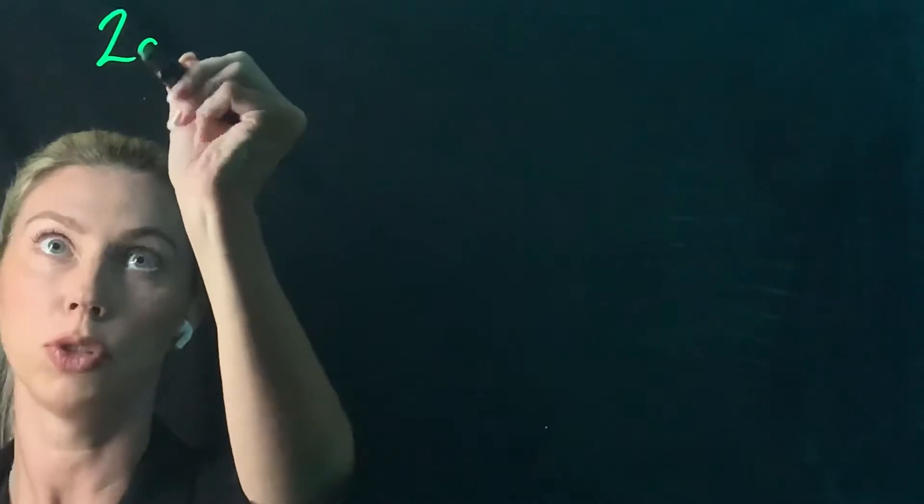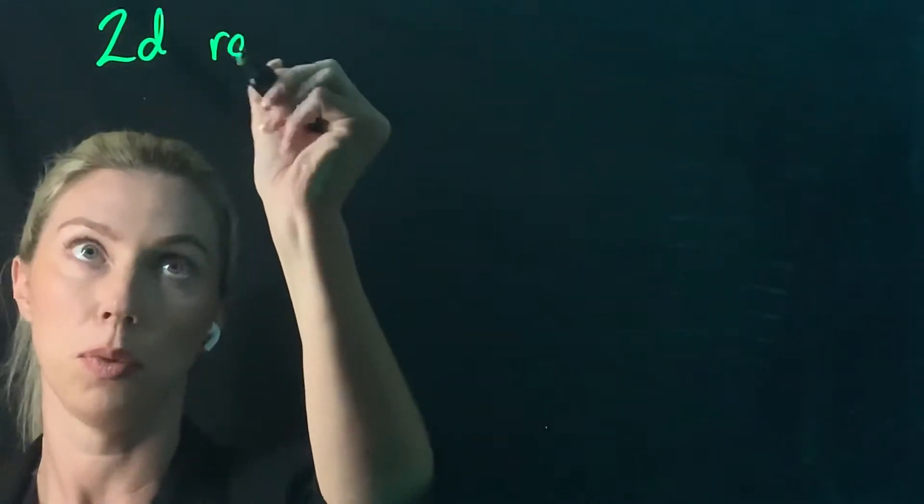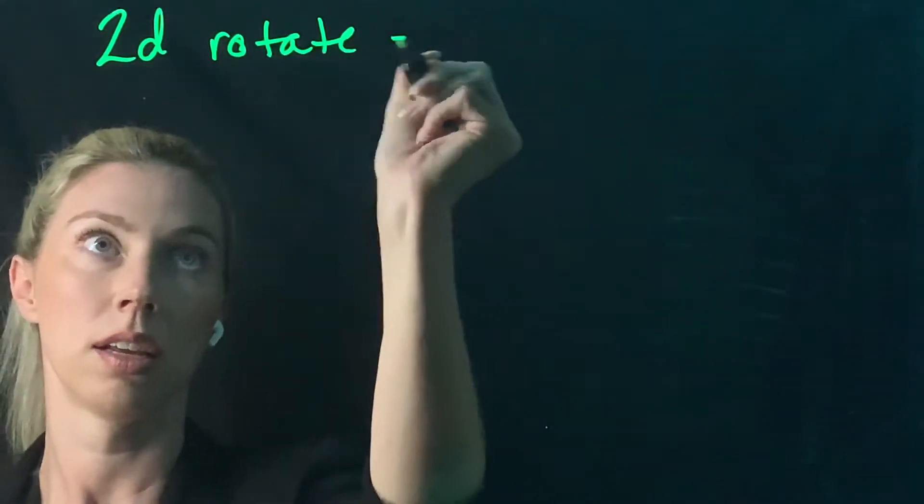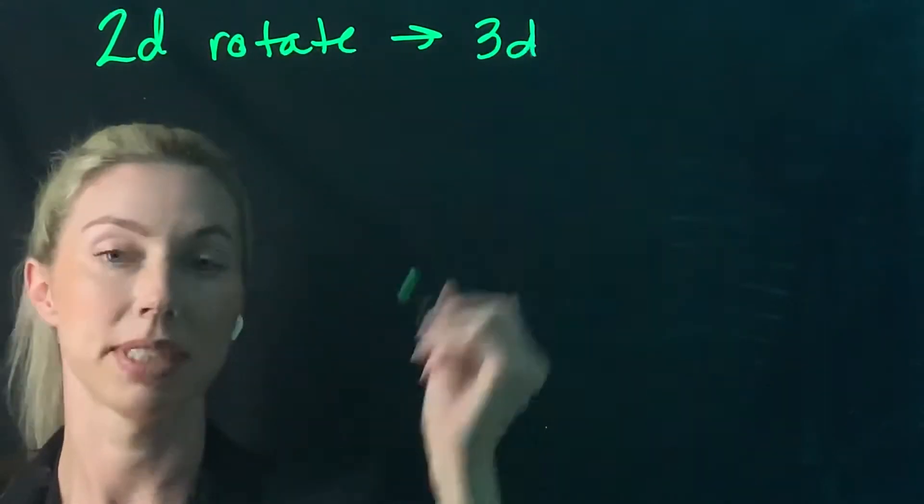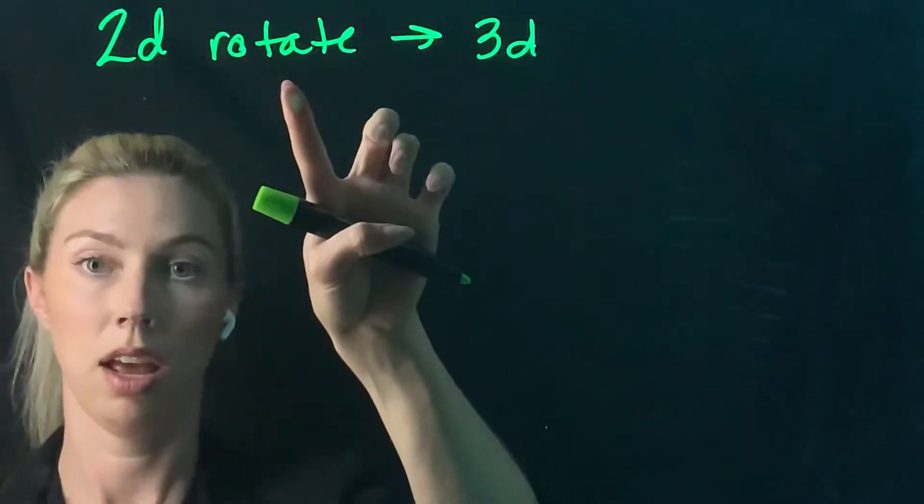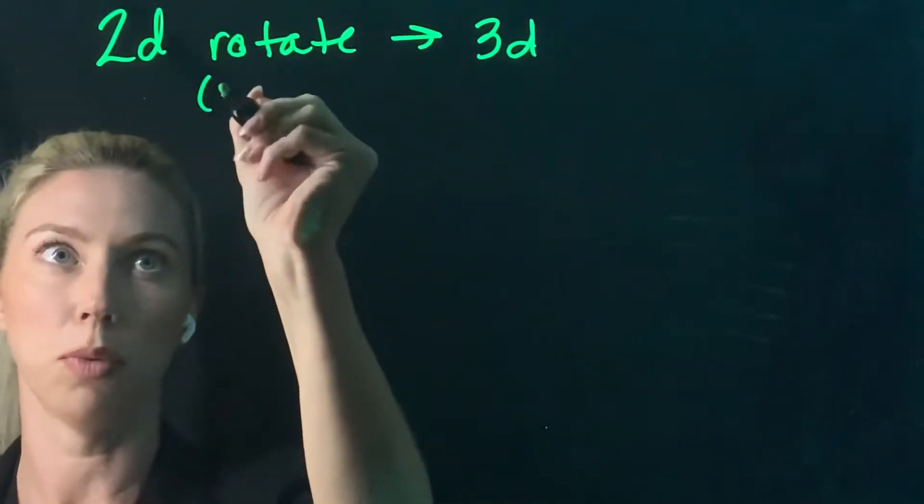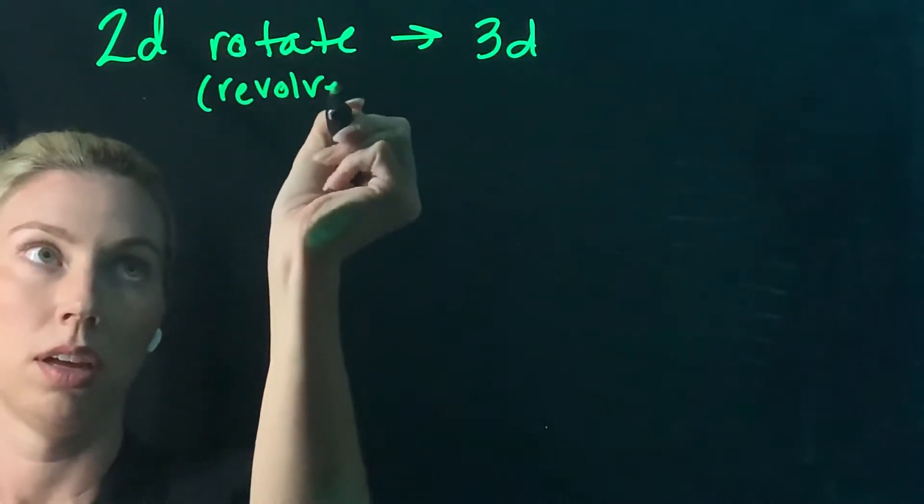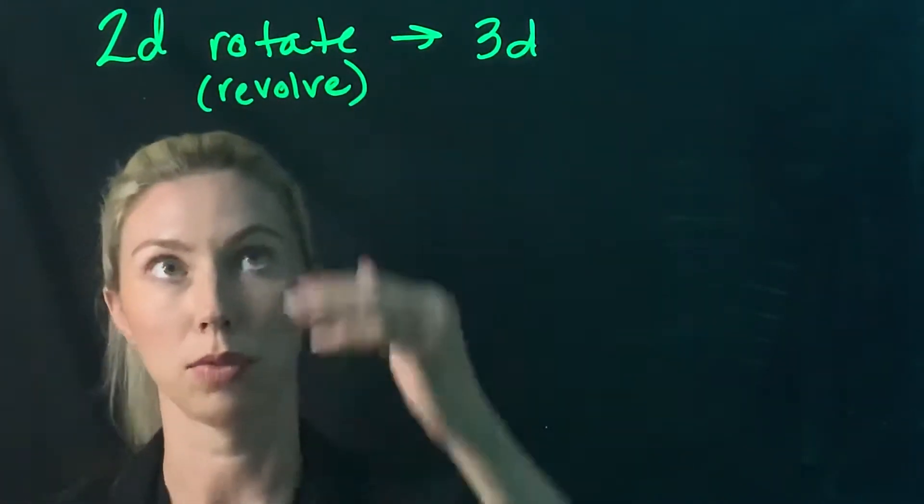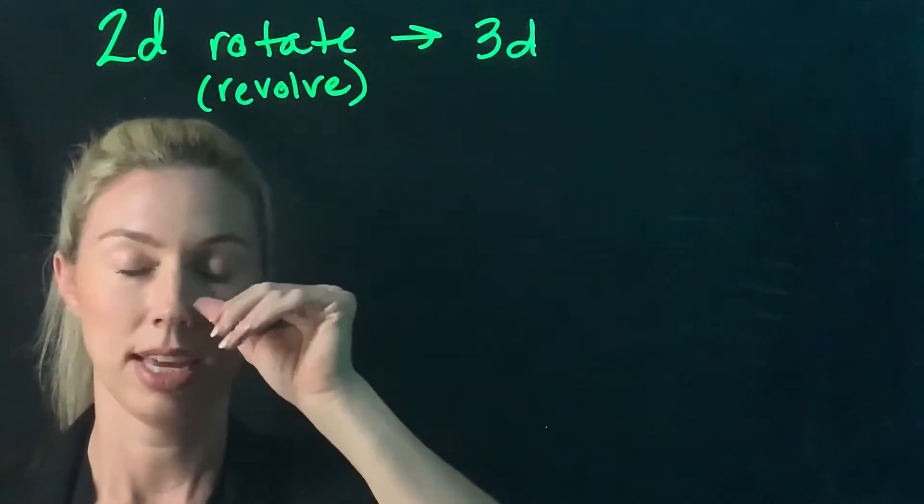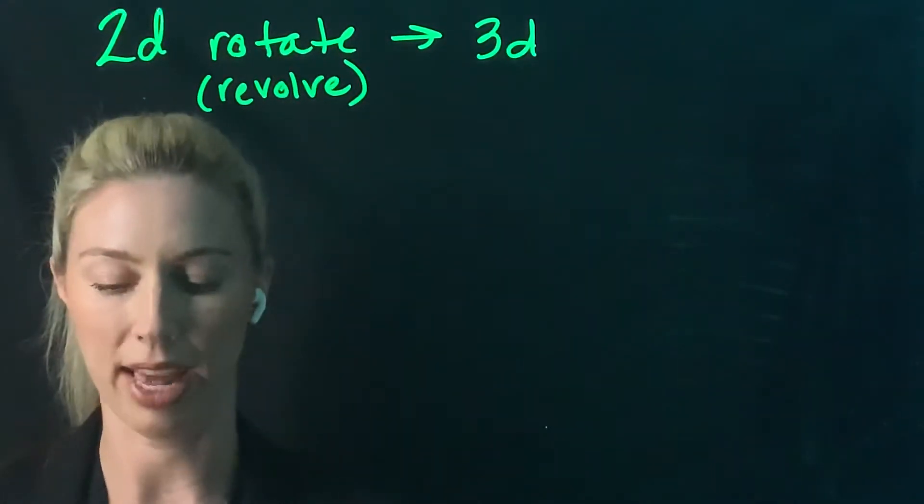I wanted to go over how 2D shapes rotate to become 3D shapes. Now, I don't like this word rotate. I believe it should be revolve, or instead of rotation, revolution, just because it's moving in a three-dimensional way.